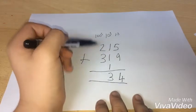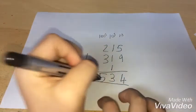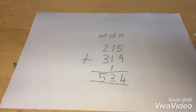And do two add three, just five. Your answer is five hundred and thirty four. Hopefully this video helped you.